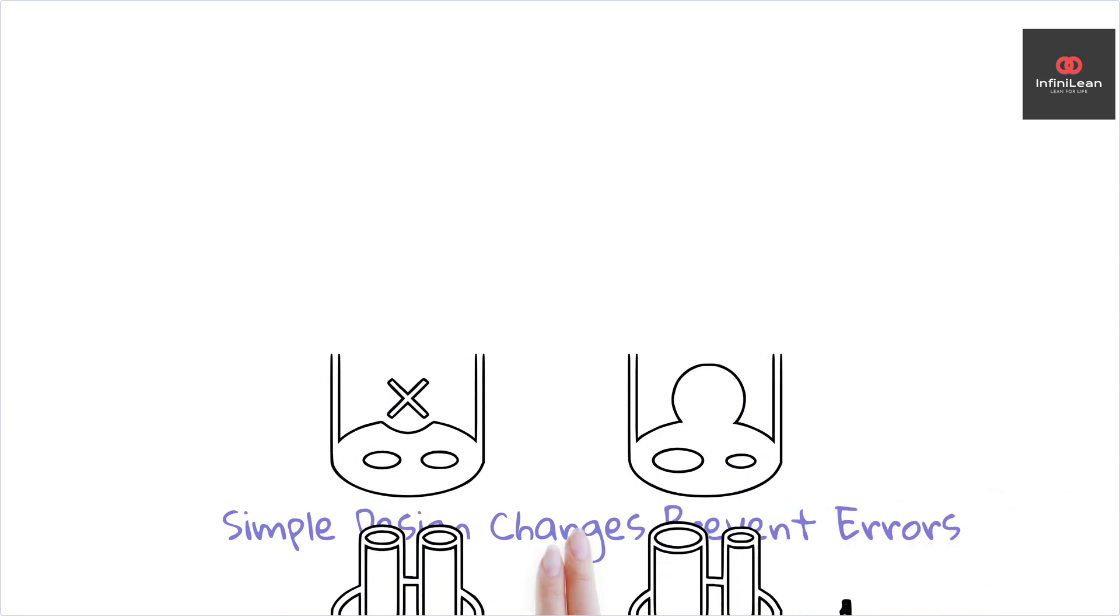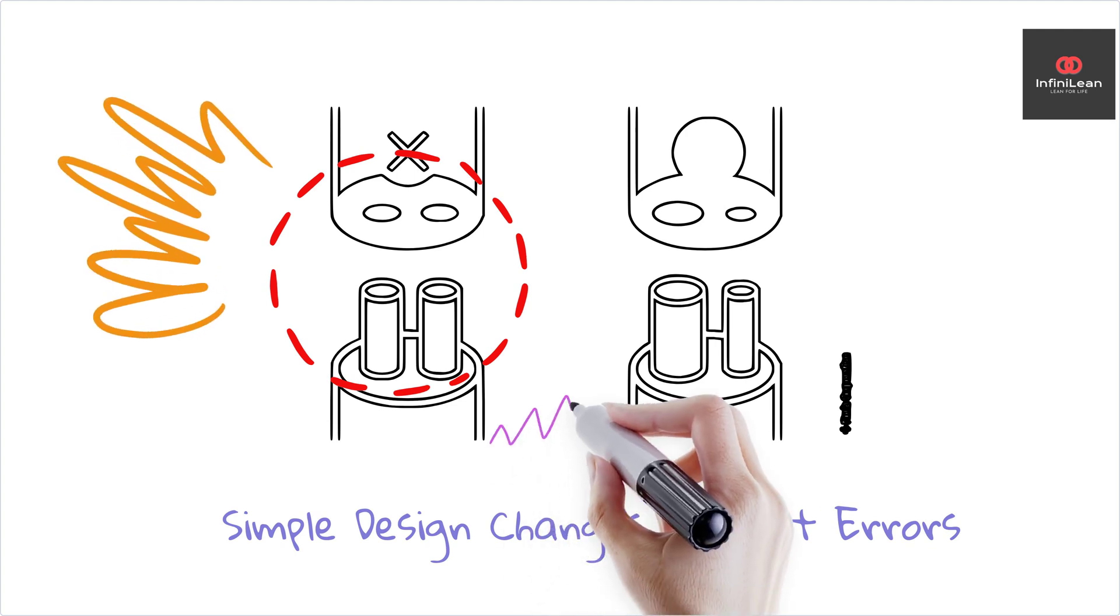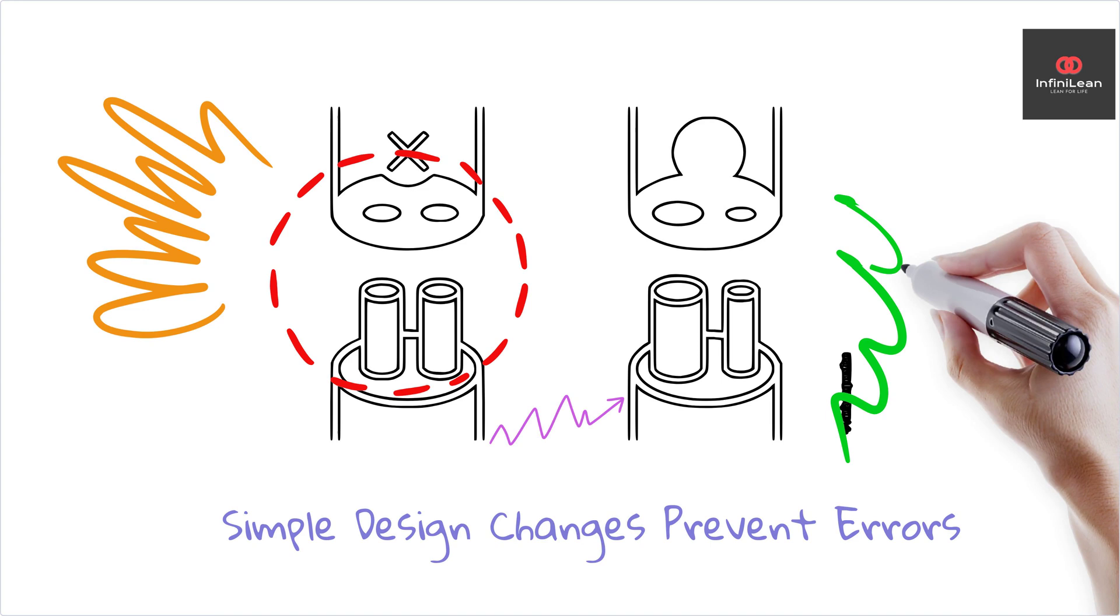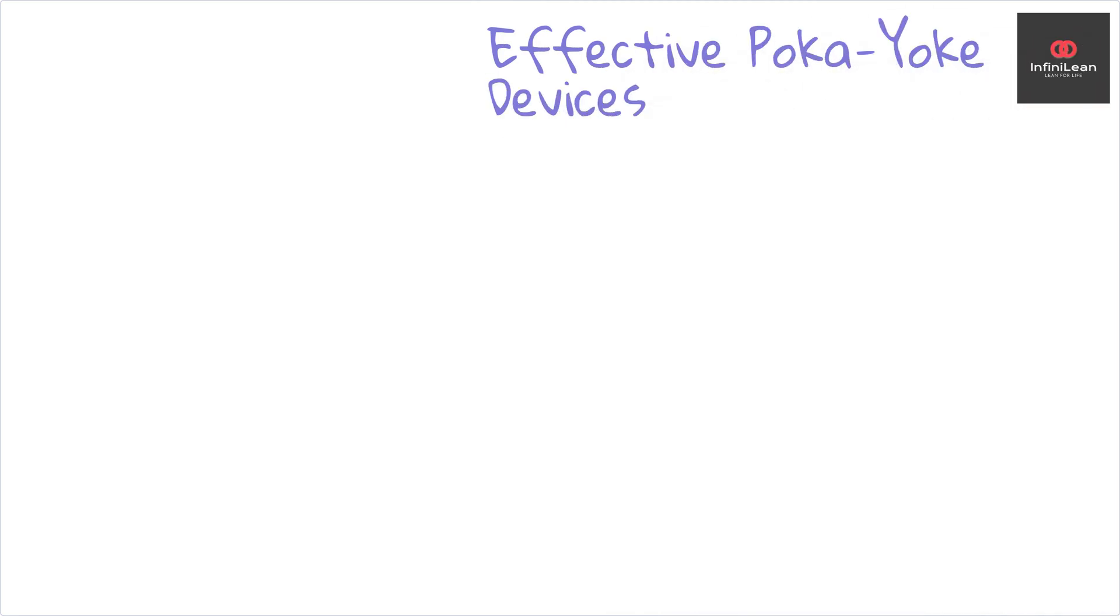Incorporating poka-yoke into your processes begins with identifying common errors affecting your output. Once pinpointed, brainstorm straightforward solutions that can physically restrict incorrect actions or highlight potential mistakes. Remember, the best poka-yoke devices are cost-effective, simple, and scalable.